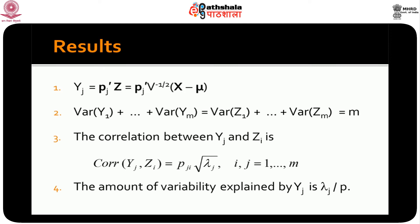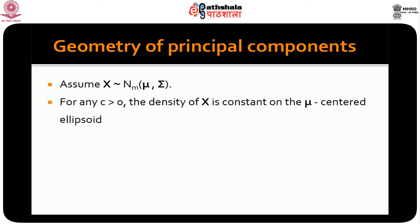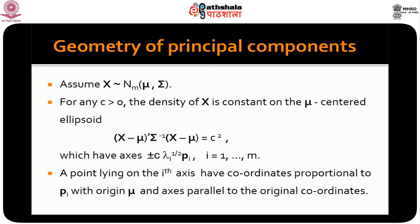To understand the geometry, let us look at the multivariate normal distribution. Suppose x follows the m-dimensional multivariate normal distribution with mean mu and variance sigma. It is known that the density of x is constant on the ellipsoid (x − mu)′ Σ^(−1) (x − mu) = c². This ellipsoid has axes ±c√(λ_i) e_i, where i runs from 1 to m — these are the eigenvalue–eigenvector pairs. A point lying on the ith axis of the ellipsoid has coordinates proportional to the p_i's in the coordinate system with origin mu and axes parallel to x_1, x_2, ..., x_p.